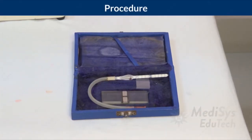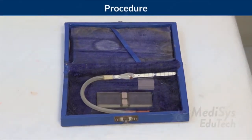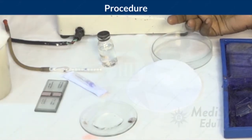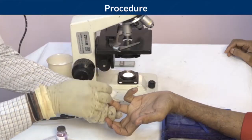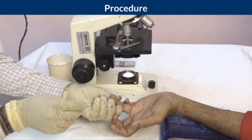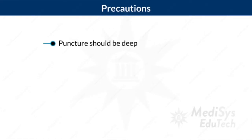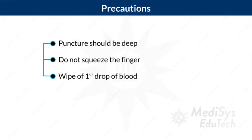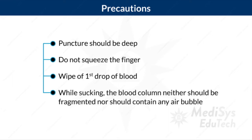Keep all apparatus clean and dry. Take adequate RBC fluid in a watch glass. Prick the finger under aseptic conditions. Precautions: the puncture should be deep enough to allow spontaneous flow of blood. Do not squeeze the finger as squeezing expresses tissue fluid. Wipe off the first drop of blood as it is mixed with tissue fluid. While sucking the blood, the blood column should not be fragmented nor should it contain air bubbles.